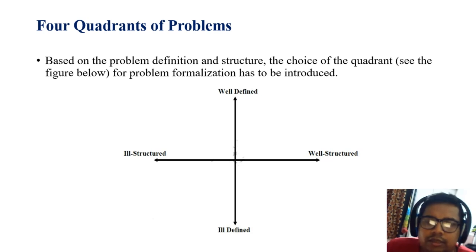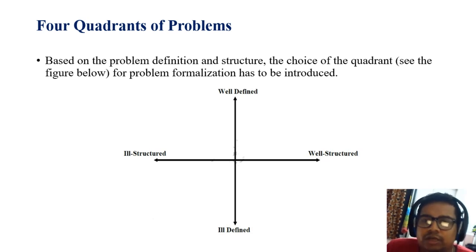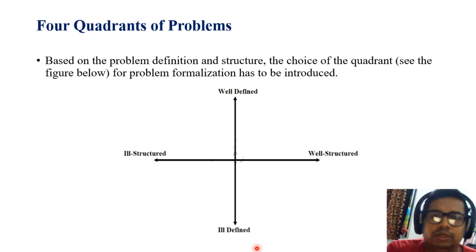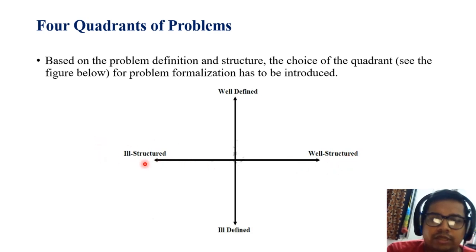In this slide, we define four axes to represent a well-defined, ill-defined, ill-structured, and well-structured problem. If you look at the axis, we put a well-defined problem and the opposite is an ill-defined problem. On the right-hand side, we have a well-structured problem and the opposite is an ill-structured problem. Let us discuss each one by one.